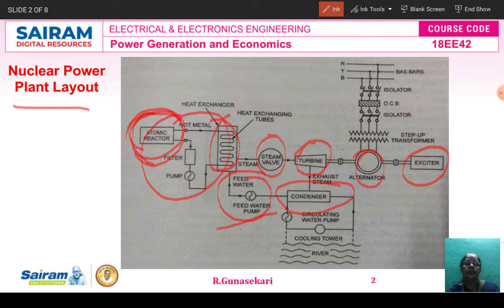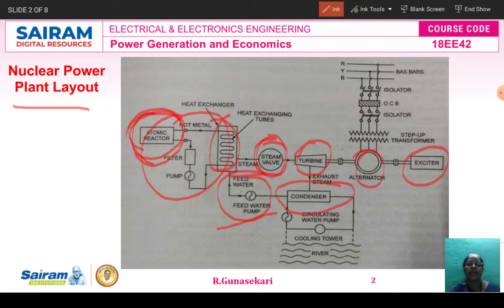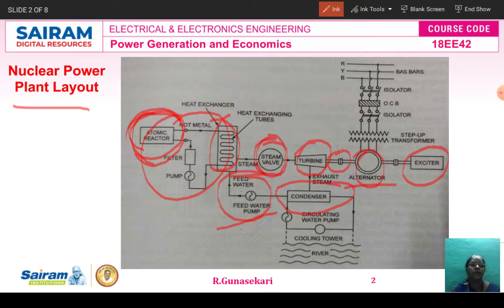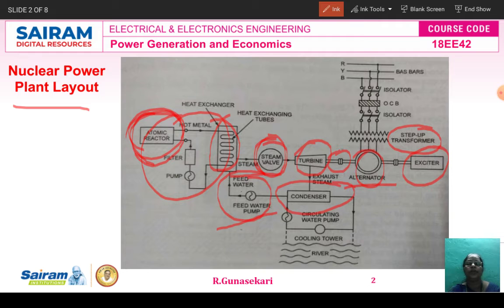This water is converted into steam. Through the steam valve, the steam from the heat exchanger at high pressure and high temperature goes to the turbine. The turbine converts this steam energy into mechanical energy. The turbine and the alternator are coupled on the same shaft, and the turbine's mechanical energy drives the alternator. The alternator produces electrical energy, which is stepped up by the step-up transformer and then transmitted to the consumers. This is the basic principle of the nuclear power plant layout.